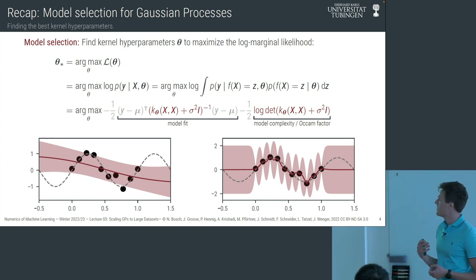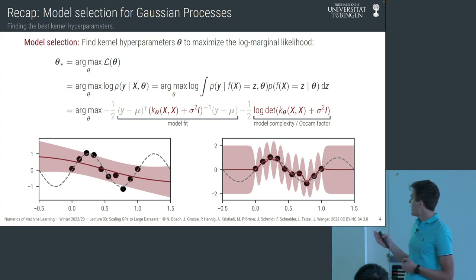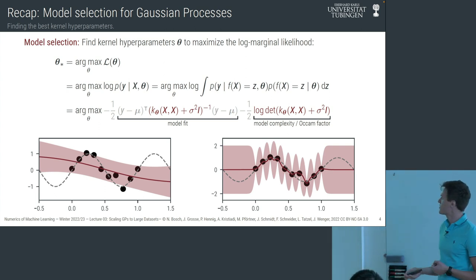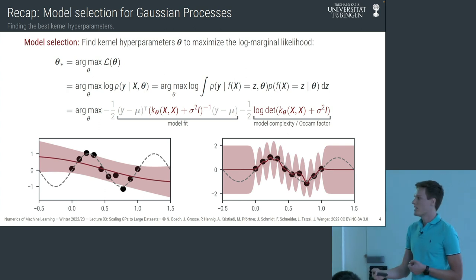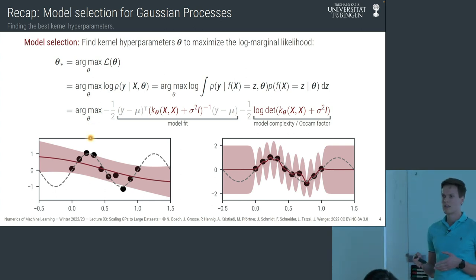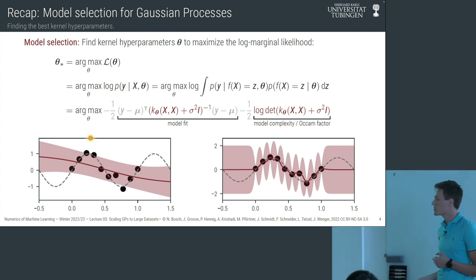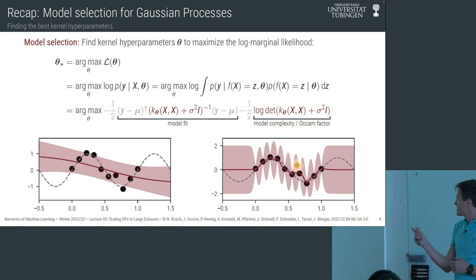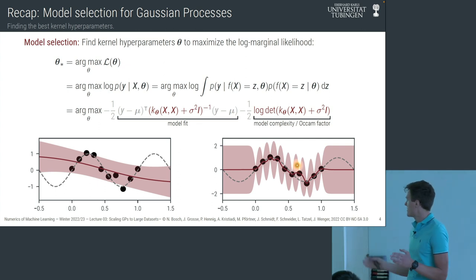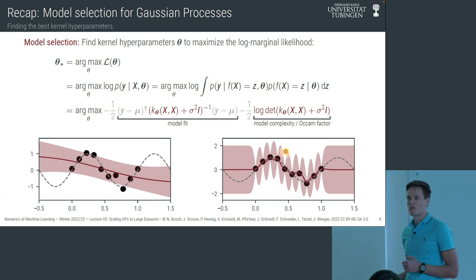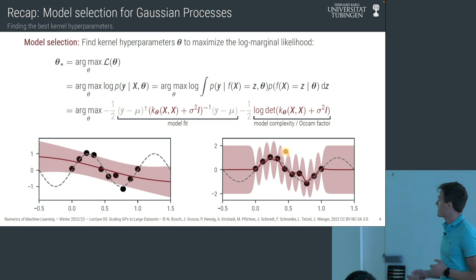Given the kernel hyperparameters, how likely is it that the data were generated from this model? You can see that if we underfit — for example, if the length scale is much wider than the true length scale — versus the opposite end, where our length scale is much too short and we overfit. Those are the two tasks, and last week we talked about the Cholesky decomposition.